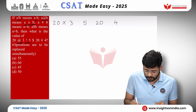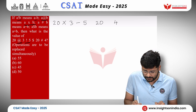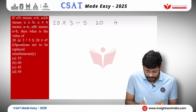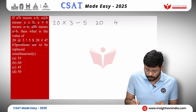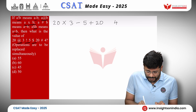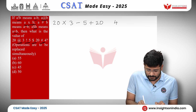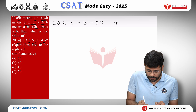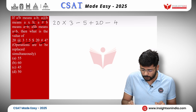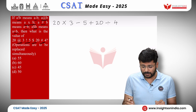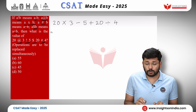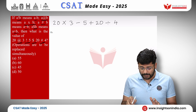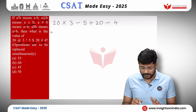To solve this, we write the numbers first: 20, 3, 5, 20, and 4. The 'at' symbol means multiply, so we write 'into'. Exclamation mark means minus, so we write minus. Dollar means plus, so we write plus. And hash means divided by, so we write divided by. Now we have a ready mathematical expression to solve.